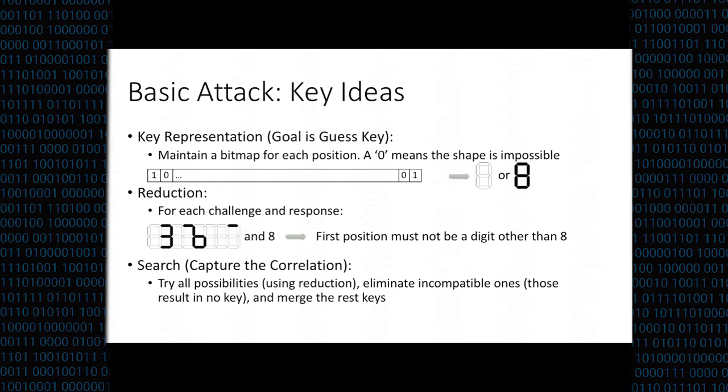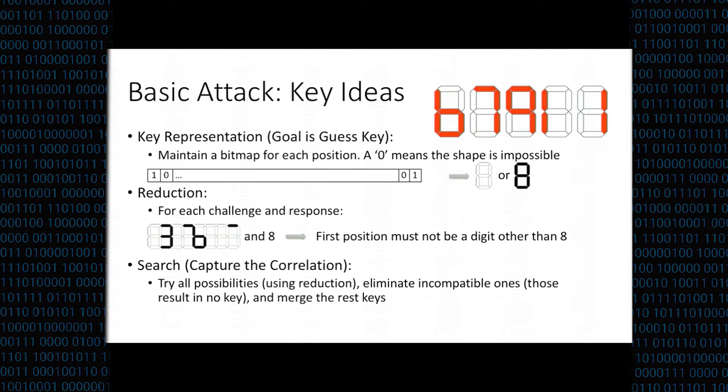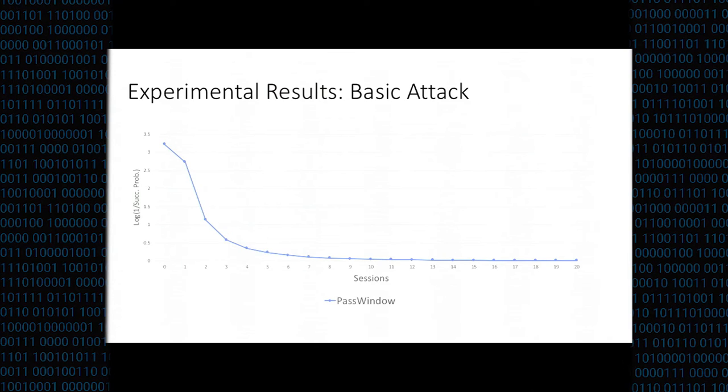The third technique is to capture the correlation between the positions. We try all possibilities and eliminate impossible keys. The basic idea is we try all possibilities and extend a tree, and each node represents some more constraints. At last, we merge the rest of the keys in the leaf nodes. By the way, these are the invalid patterns in the environment of PassWindow.